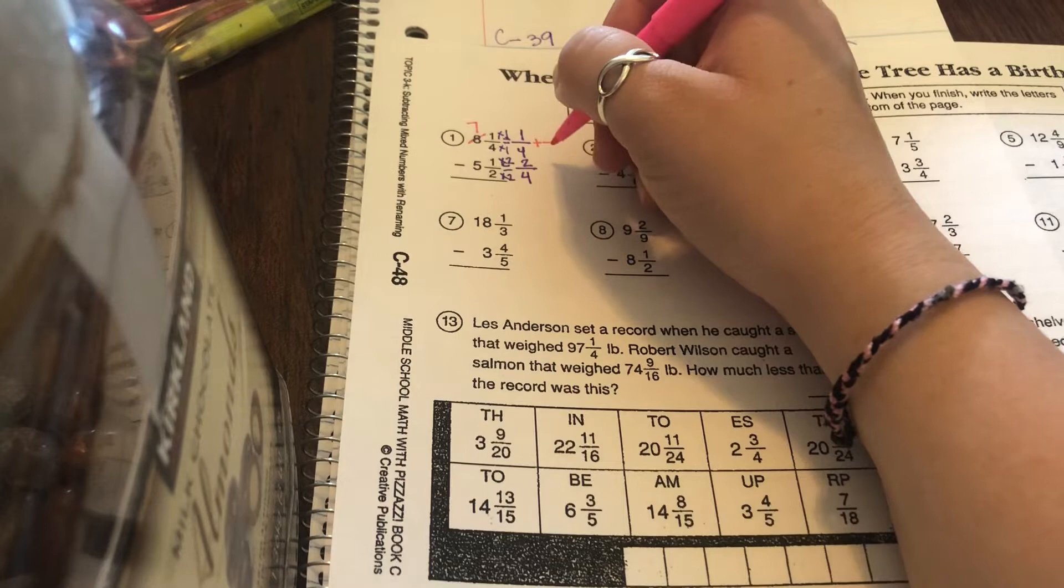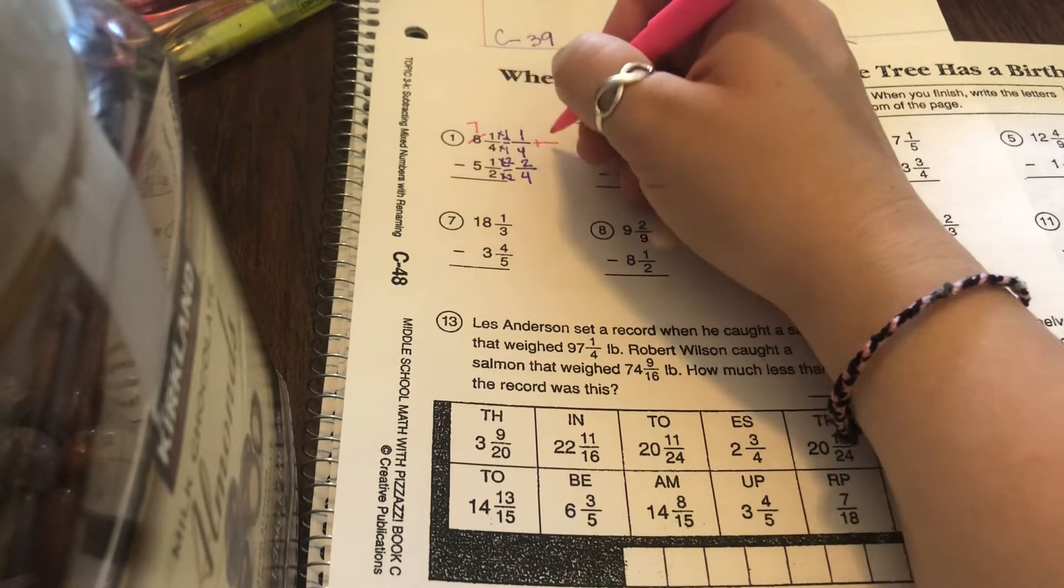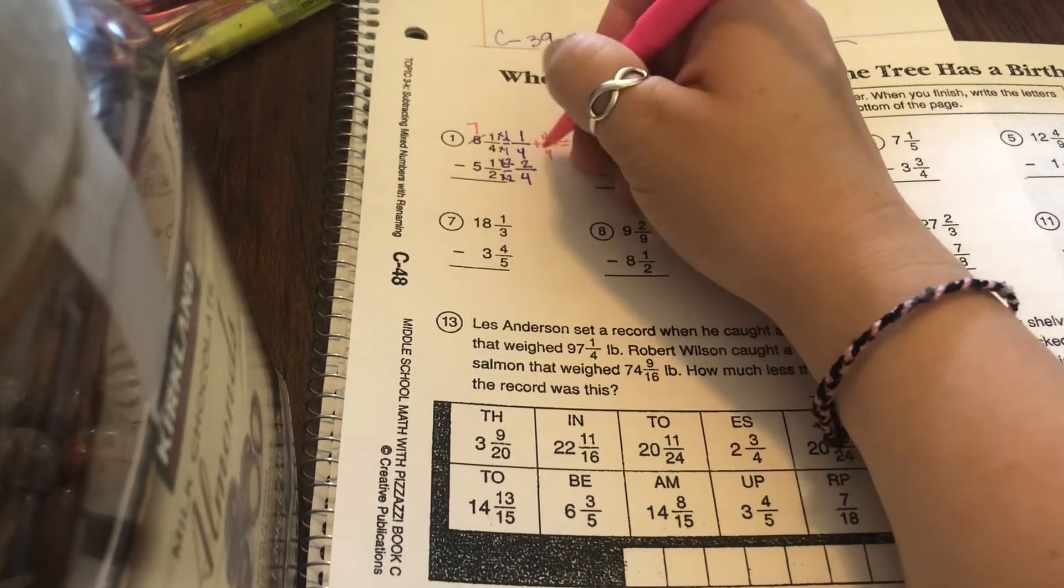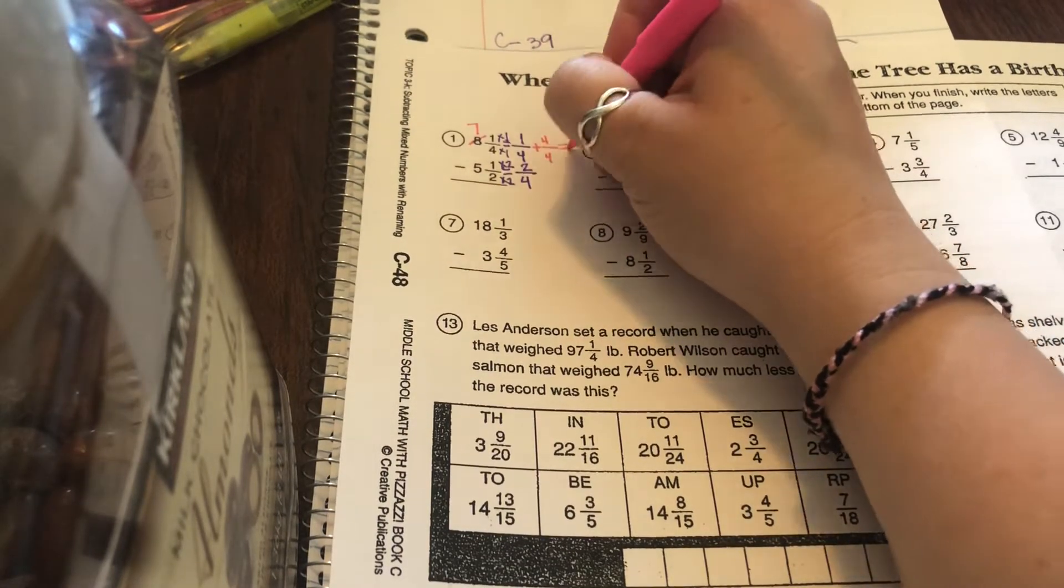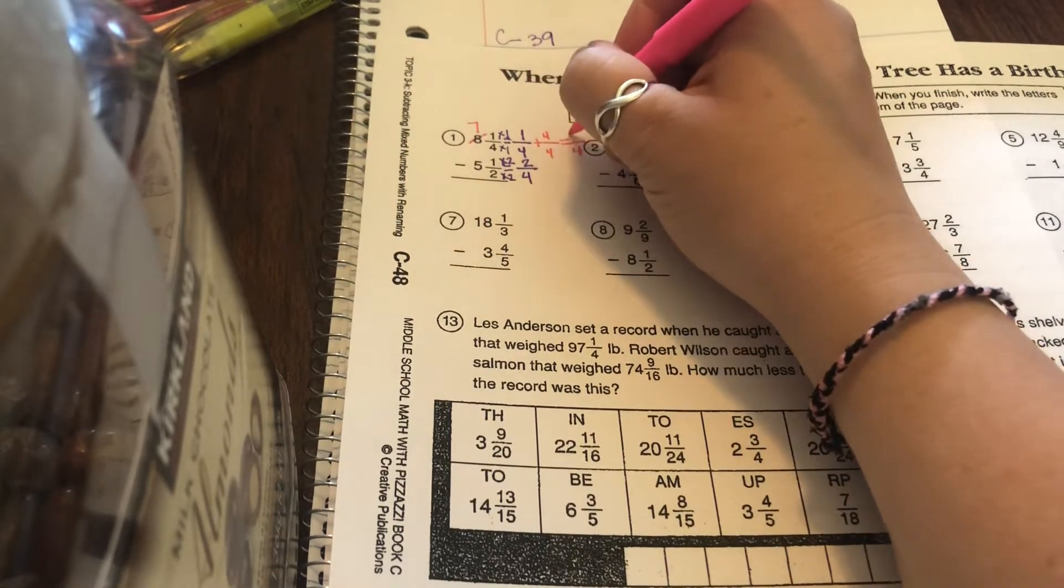When you decide what fraction to do, it's any number over itself that's 1, and I'm going to pick whatever this denominator is of 4. Because when you go to combine 1 with the 1 fourths, if they already have the same denominator, that's less work. So that stays the same, and then 1 plus 4 is 5.